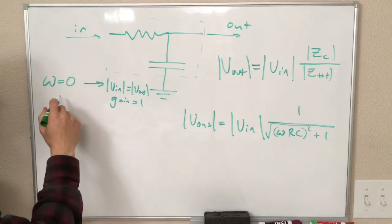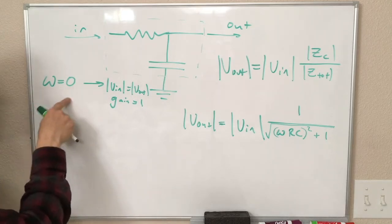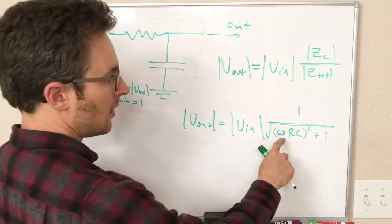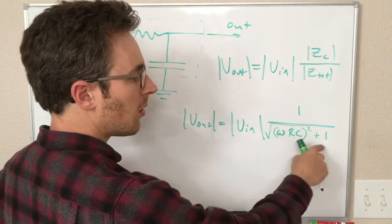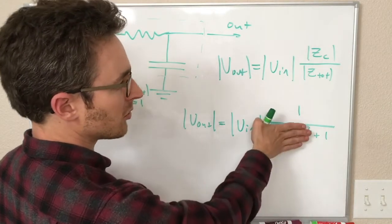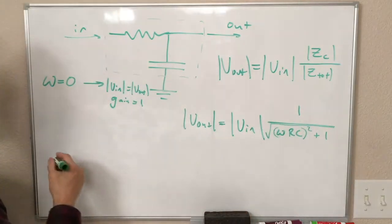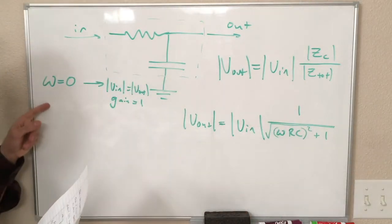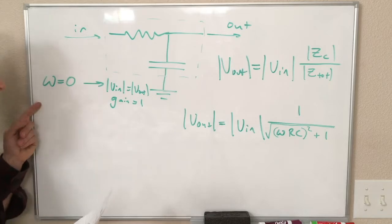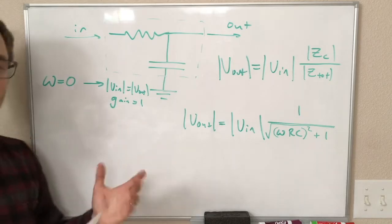For higher values of omega than 0, if they're small enough, if it's a low enough frequency, omega RC is going to be small compared to 1, and so it's going to be really close to 1 over 1. For sufficiently low values of omega, the gain is 1, or very, very close to 1.